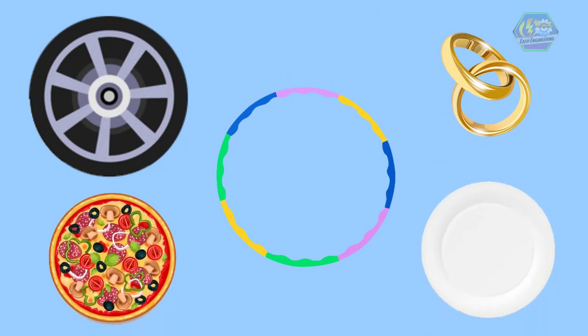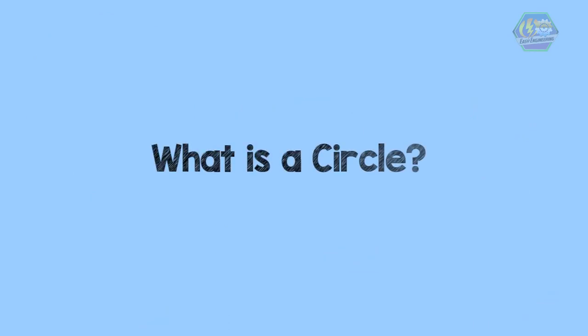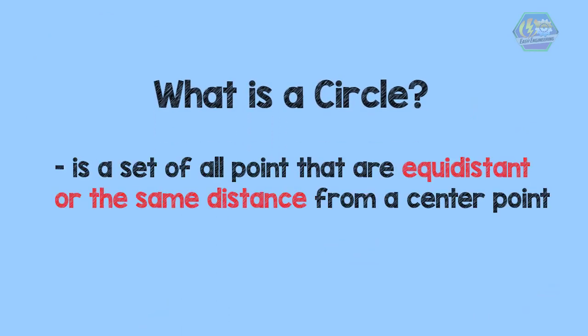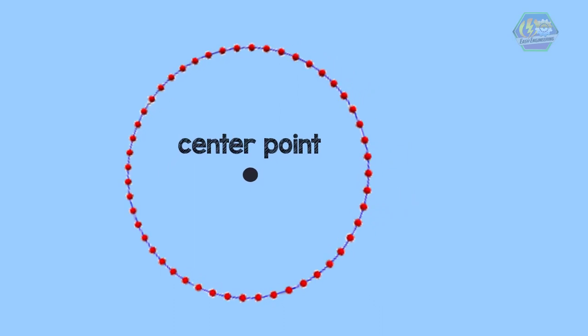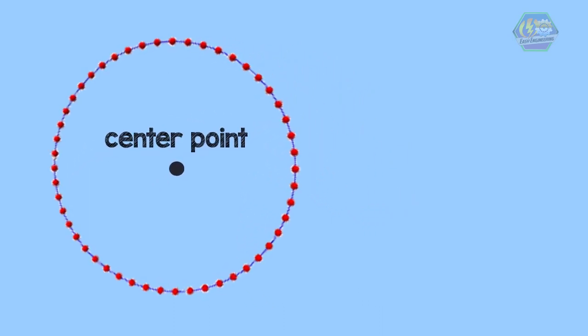But mathematically, what is a circle? A circle is a set of all points that are equidistant — or the same distance — from a center point. Now let's define some parts of the circle. First, we have the original point that we started with in drawing the circle, and it is called the center point.